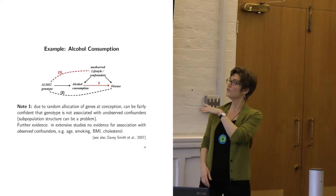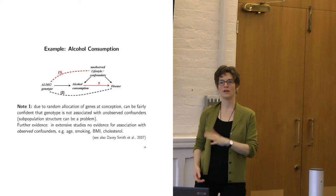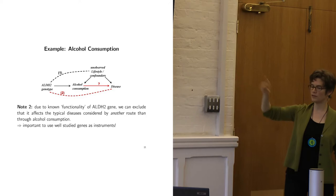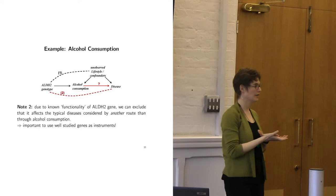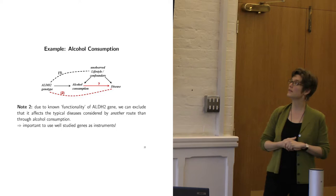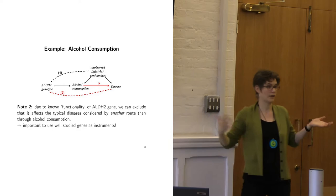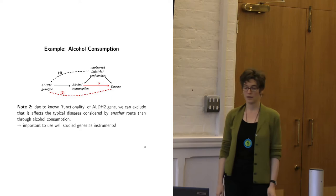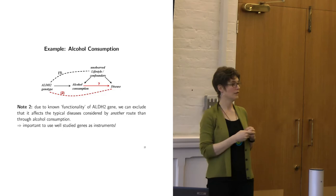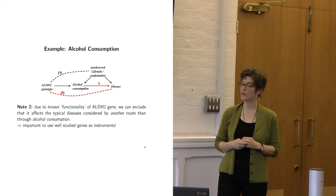You can test the lack of association with observed confounders, though you still can't test it with truly unobserved ones. The absence of a direct effect is the other assumption to consider. Knowing the biochemistry of the gene helps — it is very well known exactly what ALDH2 does, how it affects alcohol metabolism, and that it shouldn't affect coronary heart disease directly. There is no particular reason or other evidence to suggest it does. Of course, this works best when you have a very well-studied genetic variant; with many variants now coming from genome-wide association studies, it may be harder to convince ourselves of this assumption.